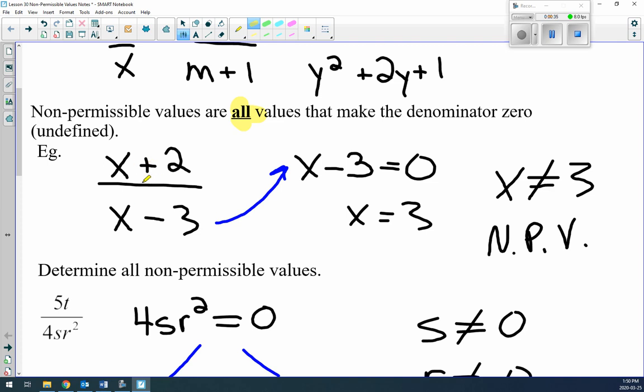When you have a rational expression like (x+2) over (x-3), we don't care about the x+2 at all. We only worry about the x-3. Set it equal to zero and we find x equals 3. So x cannot equal 3, because if it equals 3, then the denominator is zero. This is known as an NPV, or non-permissible value.